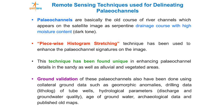For delineation of maps, we have used ground validation. Only delineation will not solve the purpose — unless we prove it from different data: geomorphic anomaly, drilling data, tube wells, hydrological parameters, age of groundwater, archaeological data, and different published maps. Everything is integrated to make the paleochannel map. Techniques like the piecewise stochastic technique are used. Not only satellite images but all these ground validations confirm the channels.